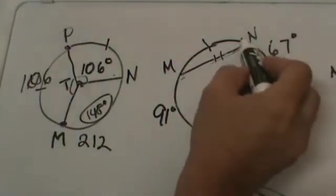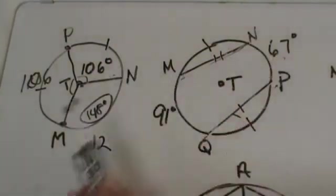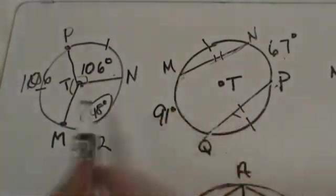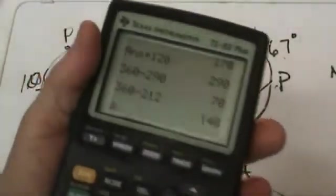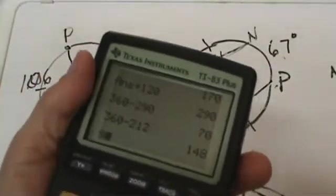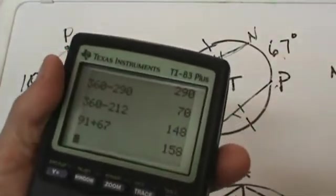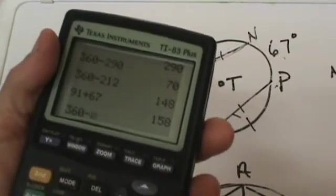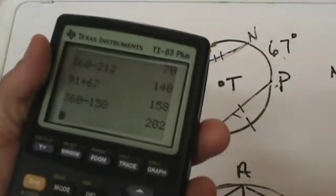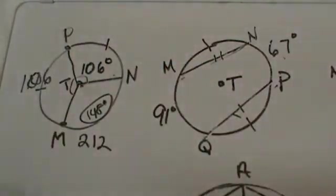If this arc from P to N is 67° and this arc from M to Q is 91°, we can just add those together. We take 91 plus 67 and that gives us 158. What is left over out of our whole circle? We have 202 degrees left over, but we need to split those equally between these two arcs.